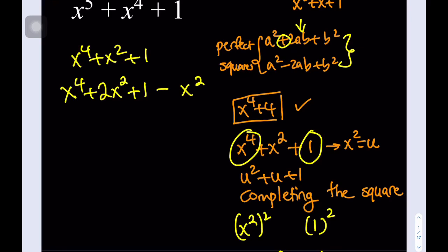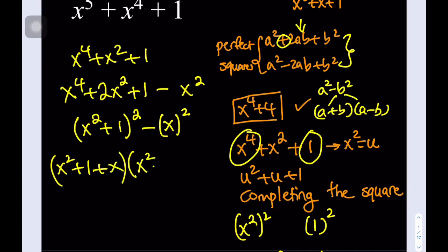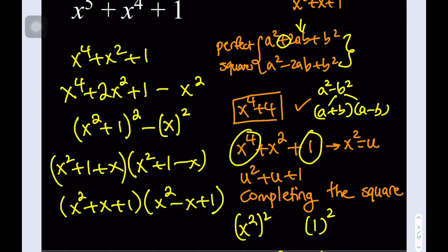Now this is great because x⁴ + 2x² + 1 − x² gives us a perfect square minus another perfect square — a difference of two squares. We can write it as (x² + 1)² − x². As you know, a² − b² factors into (a + b)(a − b), so this factors into (x² + 1 + x)(x² + 1 − x), or written in standard form: (x² + x + 1)(x² − x + 1).